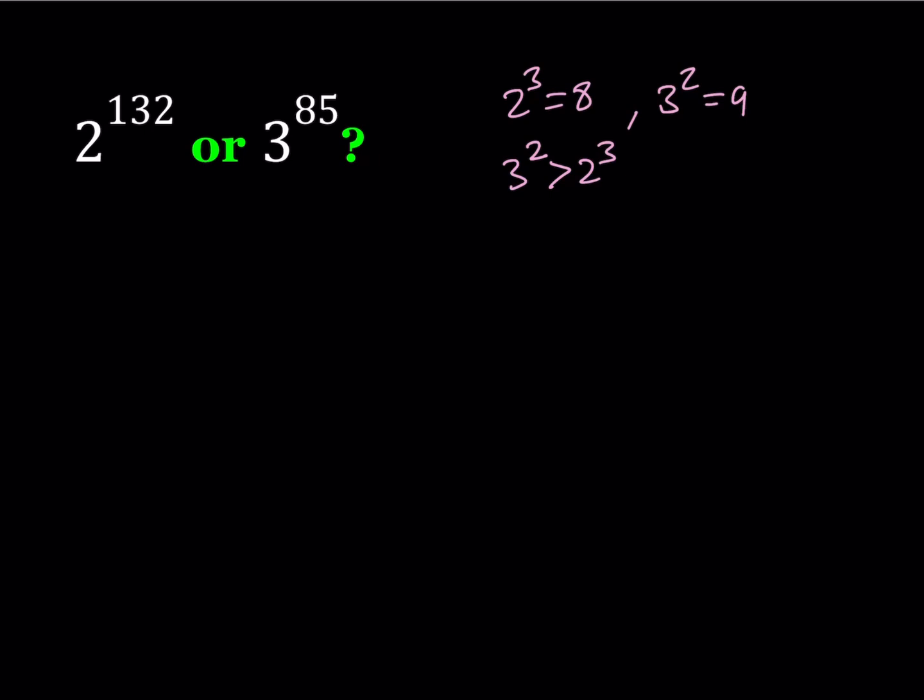To go from 3 to the 2nd to 3 to the 85 I need to raise both sides to the power 42 or something like that. Let's try that. Raise both sides to the power 42.